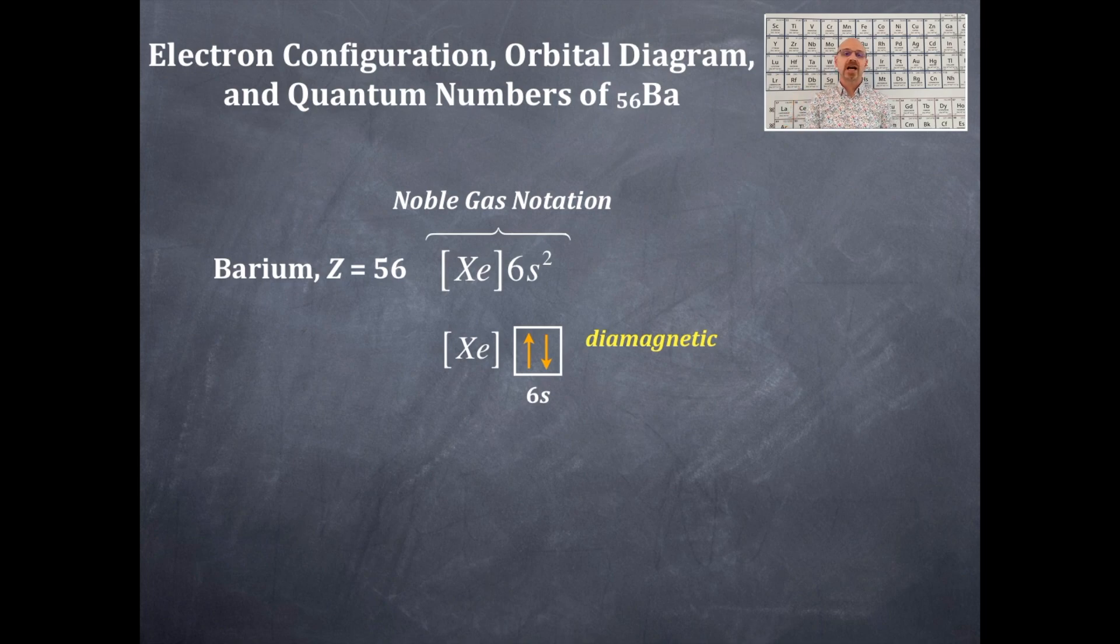So it could be a 2s, 3s, 4s, 5s, 6s, or 7s orbital because they're all like 6s² just like this barium.